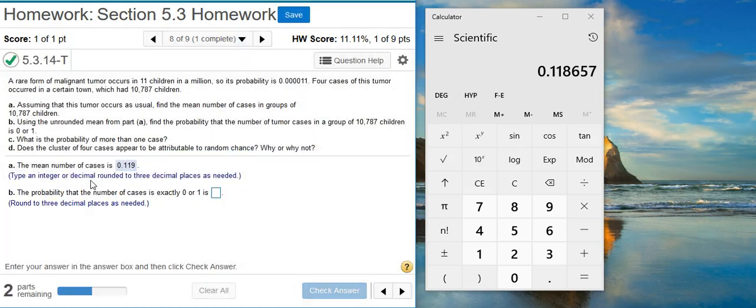Well done. Now Part B asks for the probability that the number of cases is exactly 0 or 1. Notice here in the problem statement it asks us to use the unrounded mean from Part A. So to get the probability with the Poisson distribution, I'm going to pull up StatCrunch.